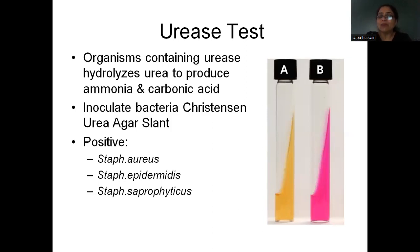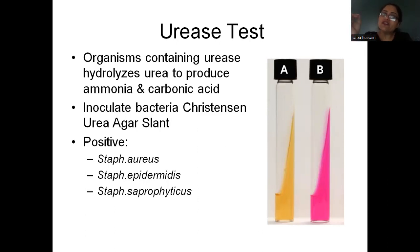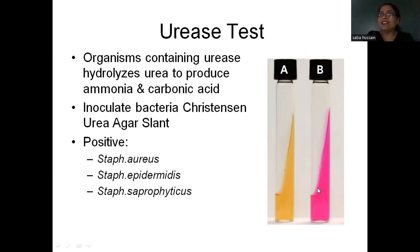Coming to next is the urease test, again for organisms containing the urease enzyme which hydrolyzes urea. Urease will hydrolyze urea to produce ammonia and carbonic acid. You inoculate the organism onto a Christensen urea agar slant. All the positive ones will give a red/pink color change. The urease test is positive in all three species that we are studying — aureus, epidermidis, and saprophyticus.